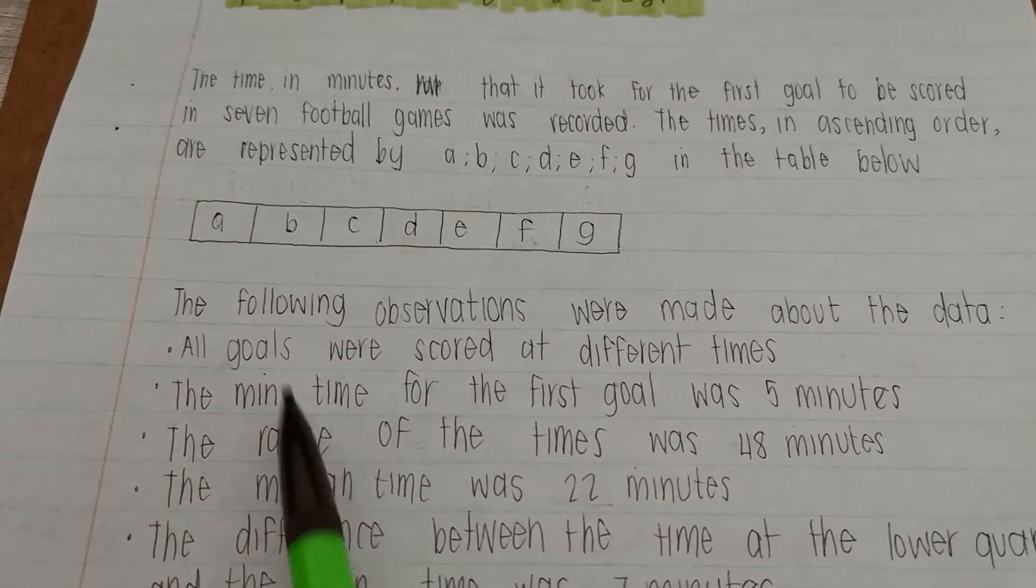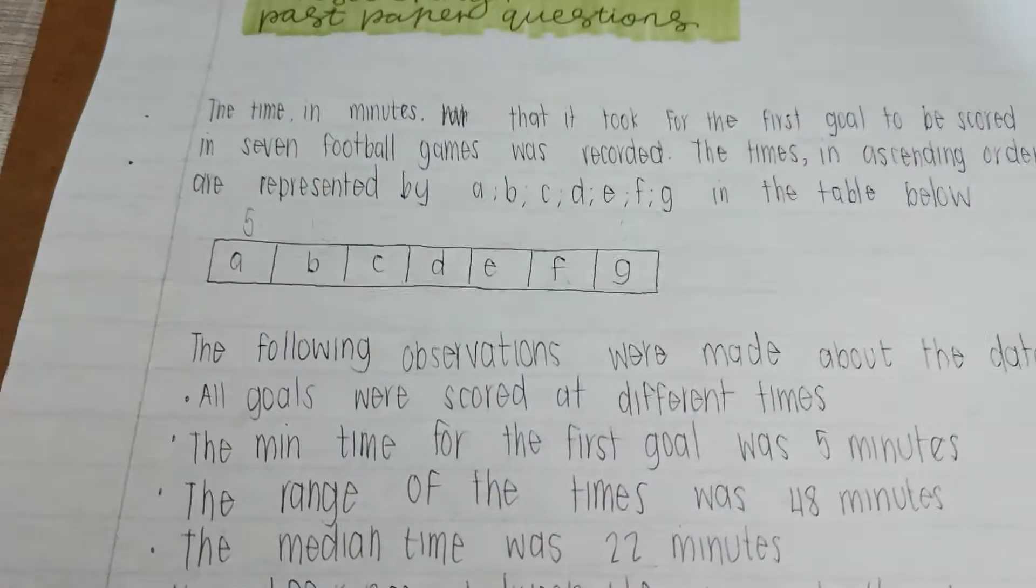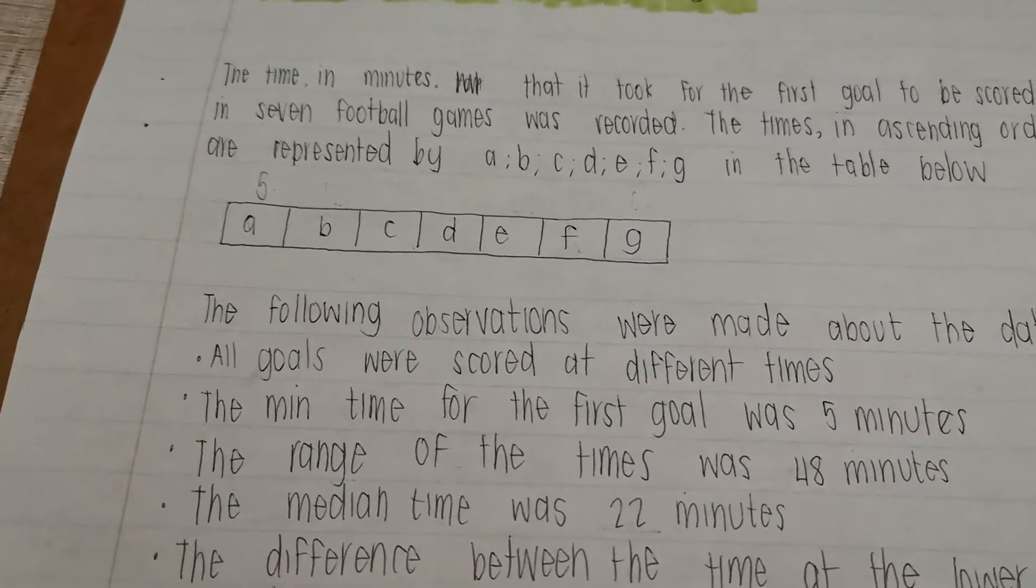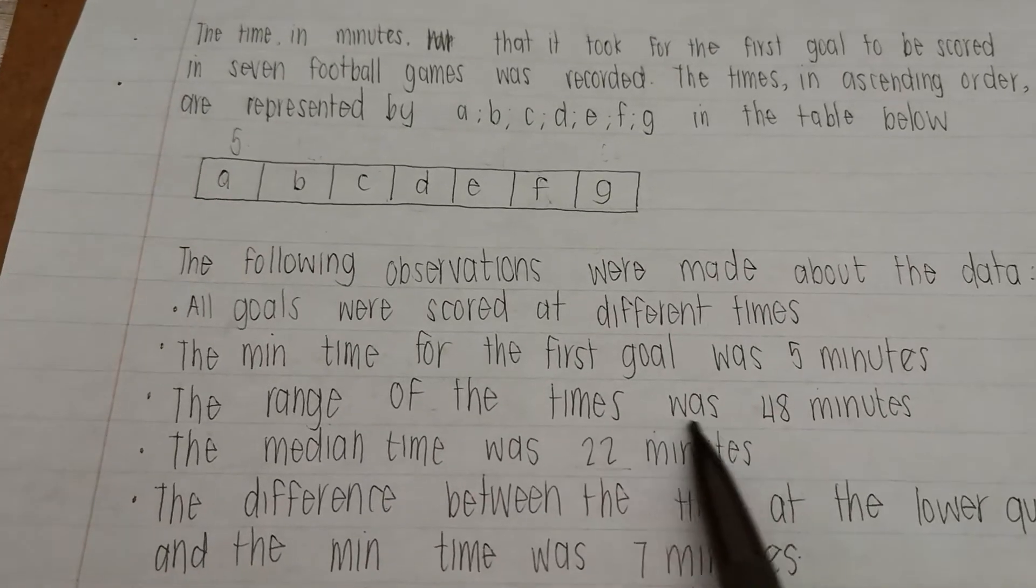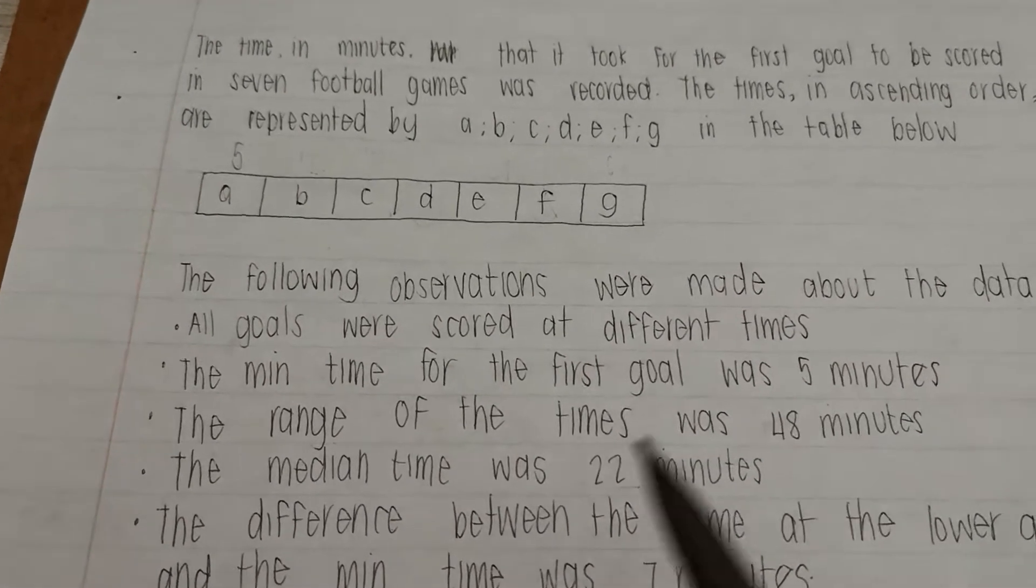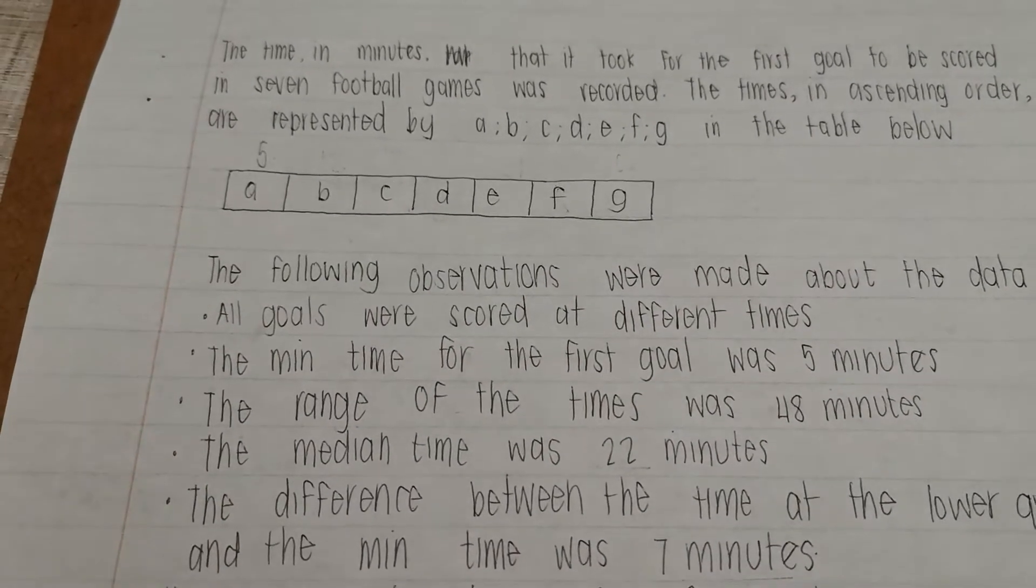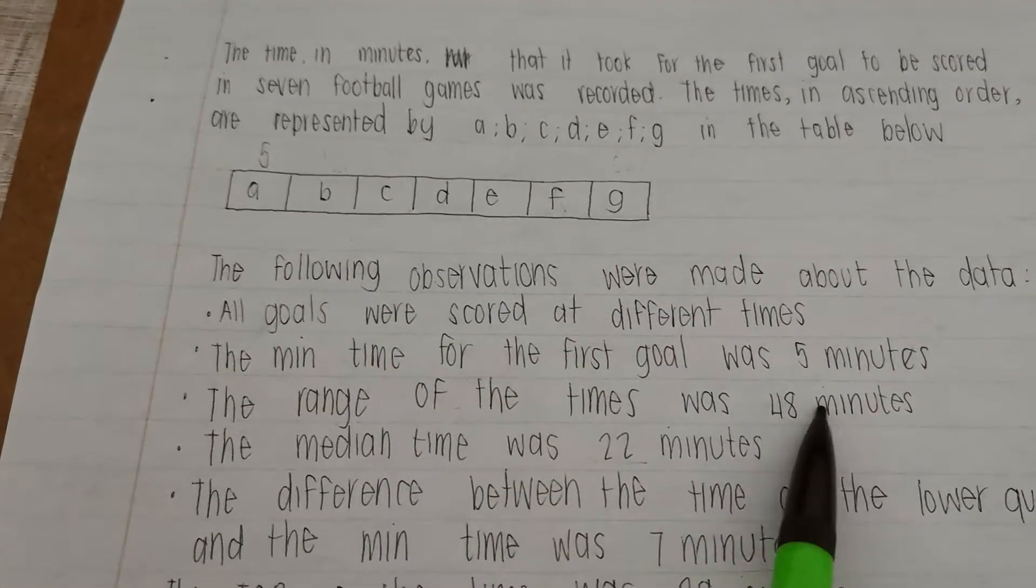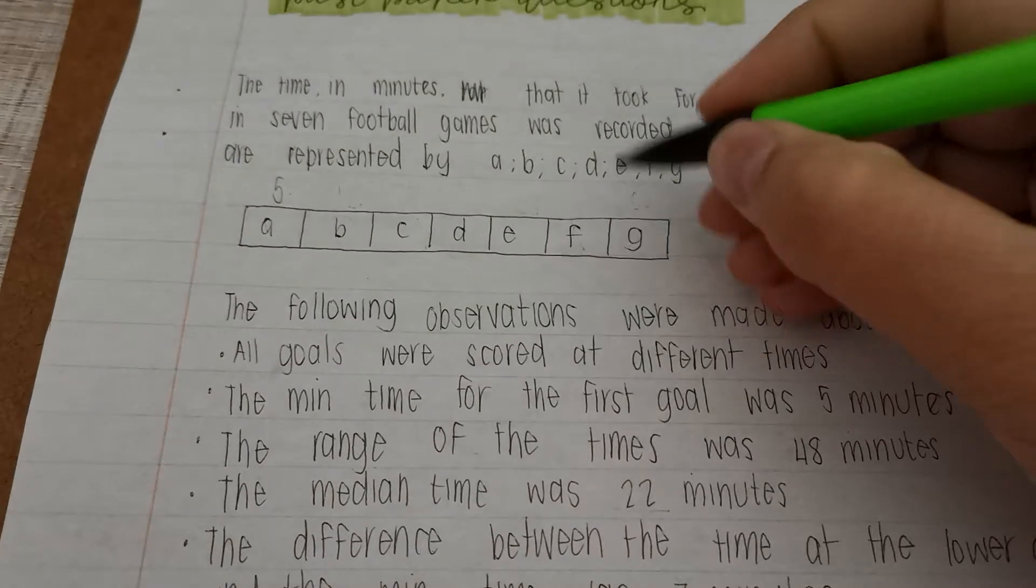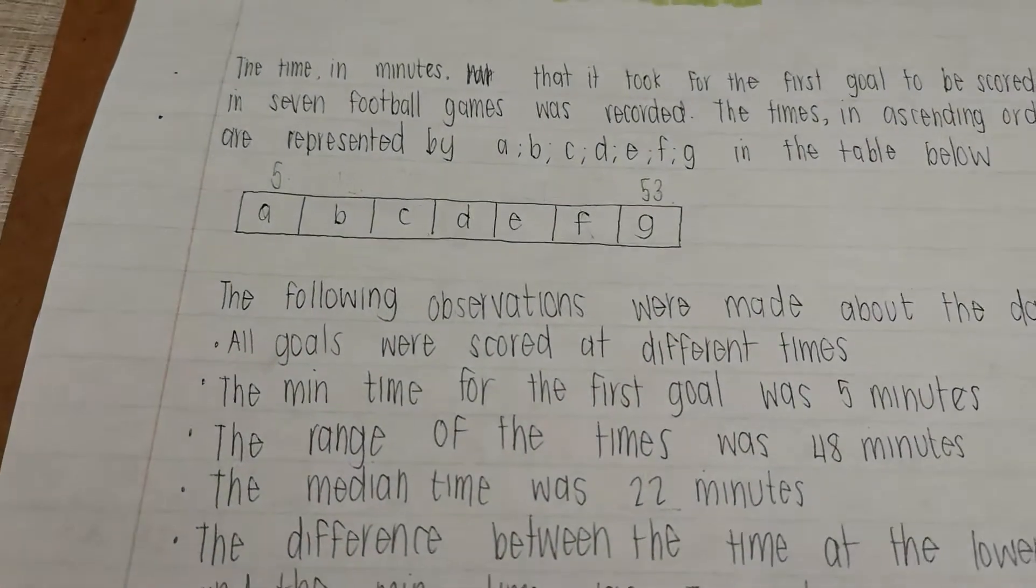The minimum time for the first goal was 5 minutes, so automatically we can fill in that this number over here is 5, because it was the minimum. It says that the range of the times was 48 minutes, so that means G minus A should give me 48. So what we're doing instead, if we're going the other way around, we're saying 5 plus the 48 must give us G, which means that G is 53.